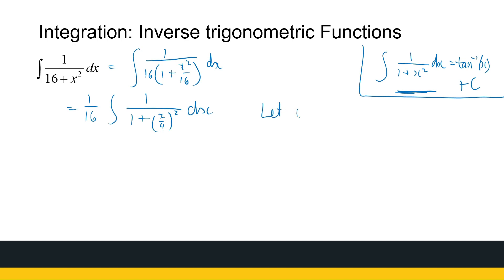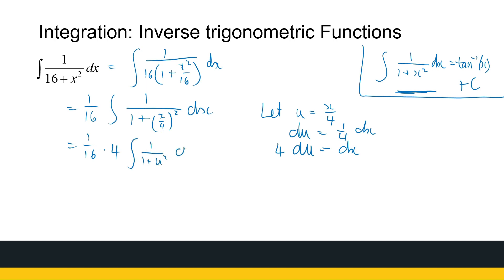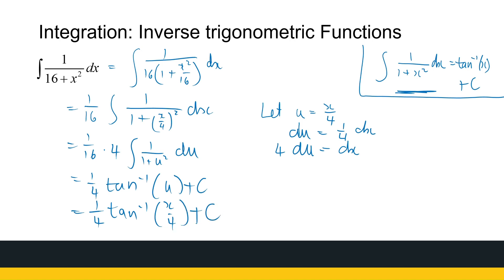Now let u equal x over four, so du equals one quarter dx, meaning dx equals four du. Substituting gives one over 16 times four times the integral of one over one plus u squared du. That simplifies to four over 16, which is one quarter, times arc tan of u plus C. Converting back to x: one quarter arc tan of x over four plus C.